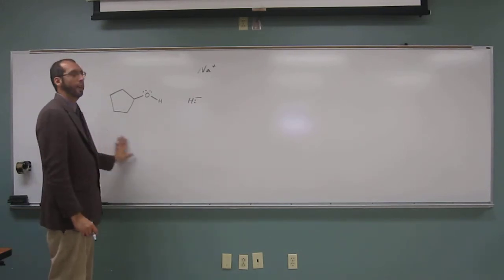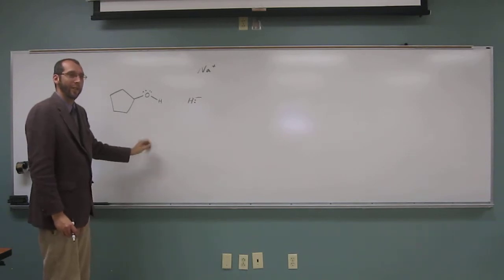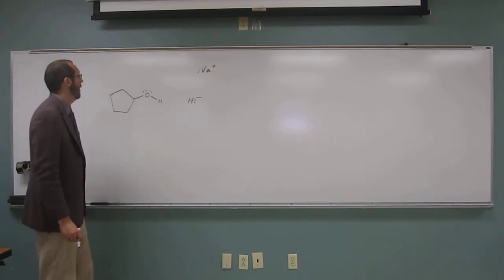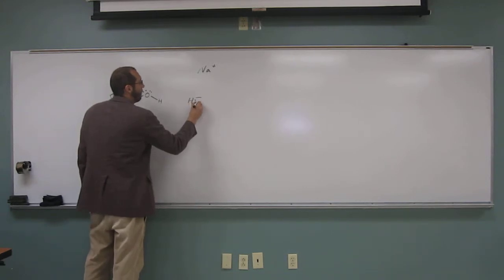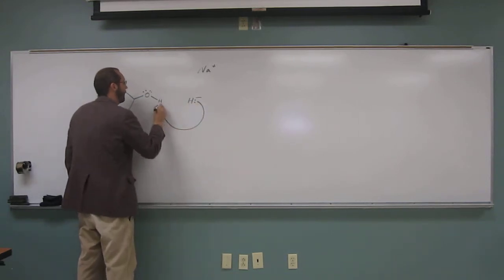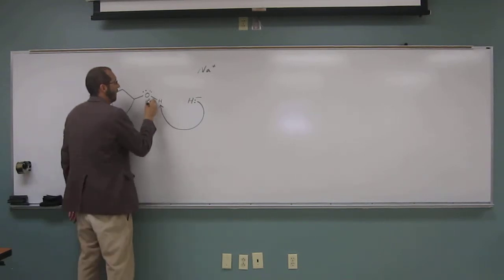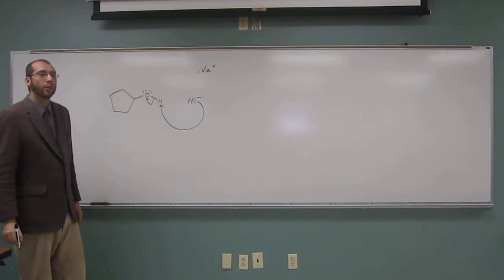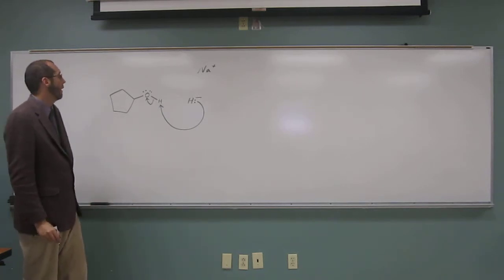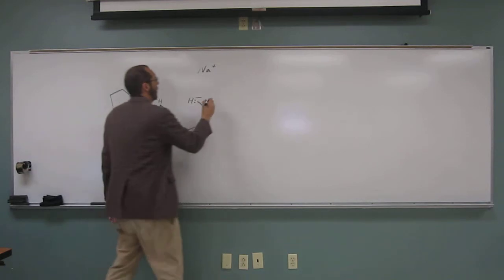And is there an acidic hydrogen over here? Does anybody see one? Yes, we do. On the oxygen, yes, the alcohol, the proton. So what's going to happen? The hydride is going to deprotonate the alcohol proton. These electrons are going to go to that oxygen there, making the alkoxide anion.